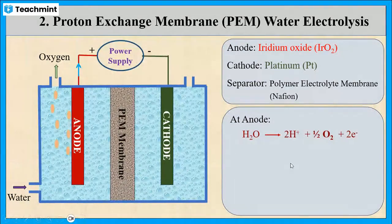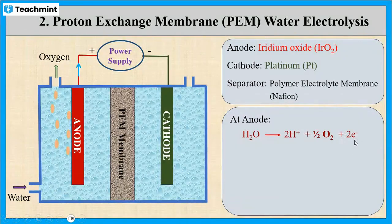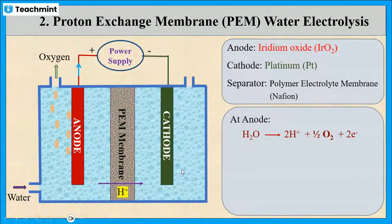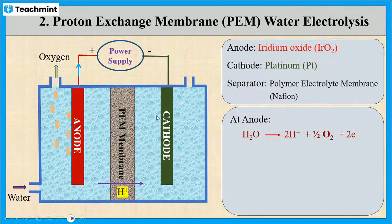This is the reaction. The water is converted into protons and oxygen gas with the liberation of electrons. These liberated protons travel through the membrane to the cathode chamber, and the electrons liberated from the anode move in the external circuit to the cathode chamber.